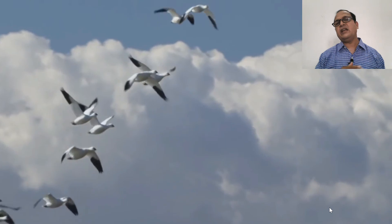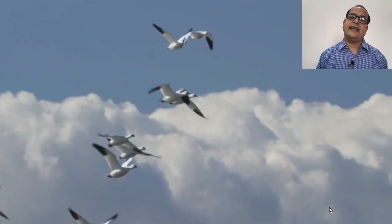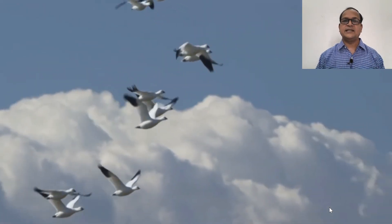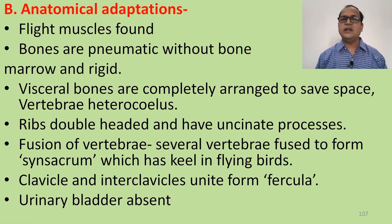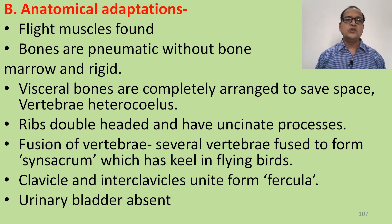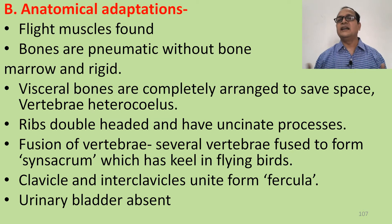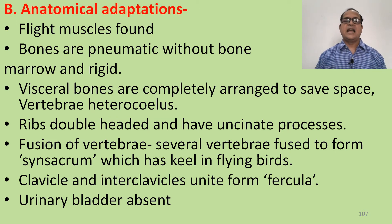Birds can fly at high altitude with the help of their wings and can migrate long distances. These wings are a great advantage for them. Regarding anatomical adaptations: the flight muscles are attached to the bones. The bones are pneumatic — without bone marrow — and air spaces are present in place of the marrow.